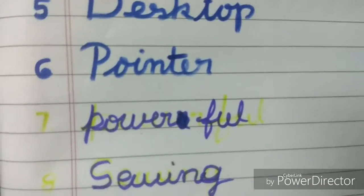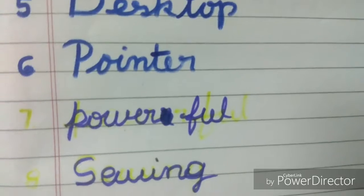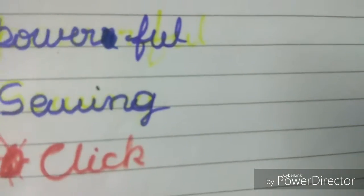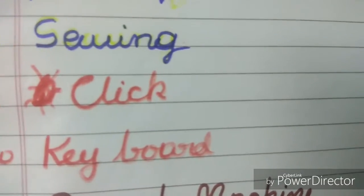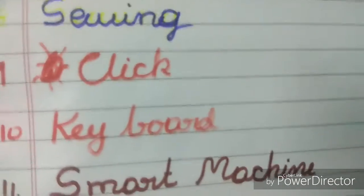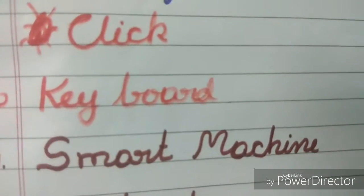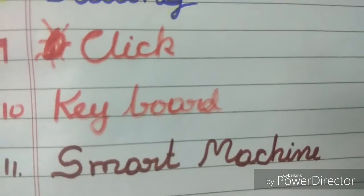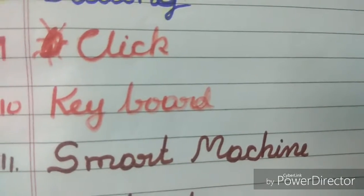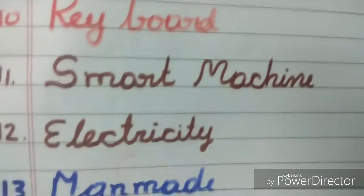Swing — S-E-W-I-N-G. Click — C-L-I-C-K. Keyboard — K-E-Y-B-O-A-R-D. Smart Machine — S-M-A-R-D, M-A-C-H-I-N-E.